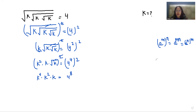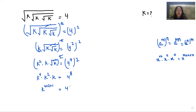Now according to the exponent rule, x to the power m times x to the power n times x to the power o equals x to the power m plus n plus o. So it becomes k to the power 4 plus 2 plus 1, which equals 4 to the power 8. So k to the power 7 equals 4 to the power 8.